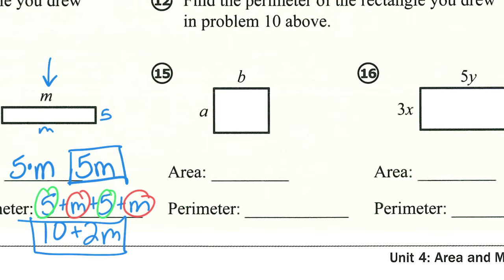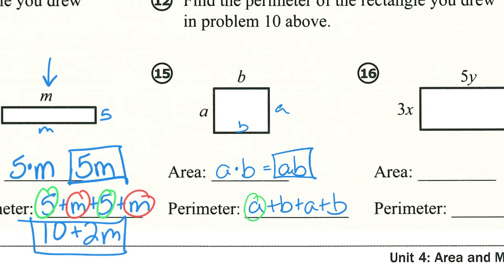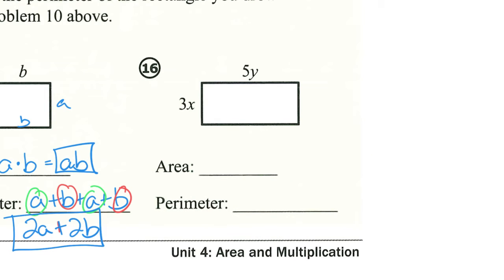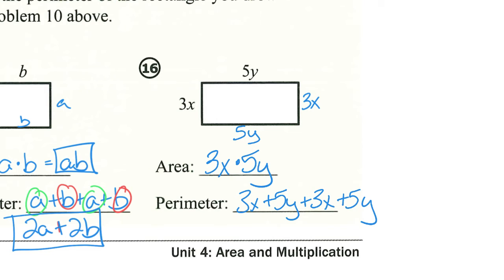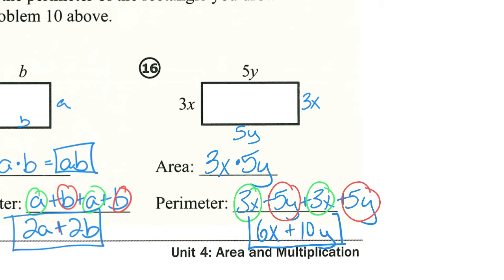In number 15, my area is going to be a times b — that's my length times my width — so I'll just leave it as ab. My perimeter would be a plus b plus another a plus another b, and simplifying that, I have two a's so that would be written as 2a, and I have two b's, so that would be written as plus 2b, and there's the perimeter. In this one, for my area I would take 3x times 5y, and for now let's just leave it like that. My perimeter: I would take 3x plus 5y plus 3x plus 5y. Now I can combine some of these — I have 3x and three more x, so in total that is 6x, and I have 5y plus 5y, and in total that is 10y, and so there's my perimeter simplified.